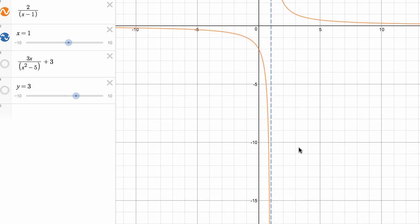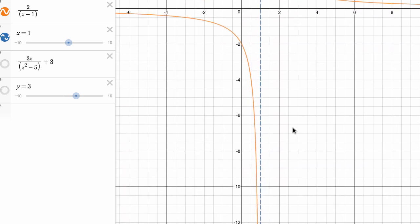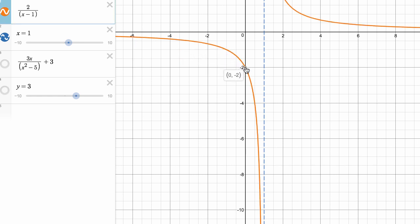So if we approach one from the left, let me zoom in a little bit over here. So we can see as we approach from the left, when x is equal to zero, the f of x would be equal to negative two.